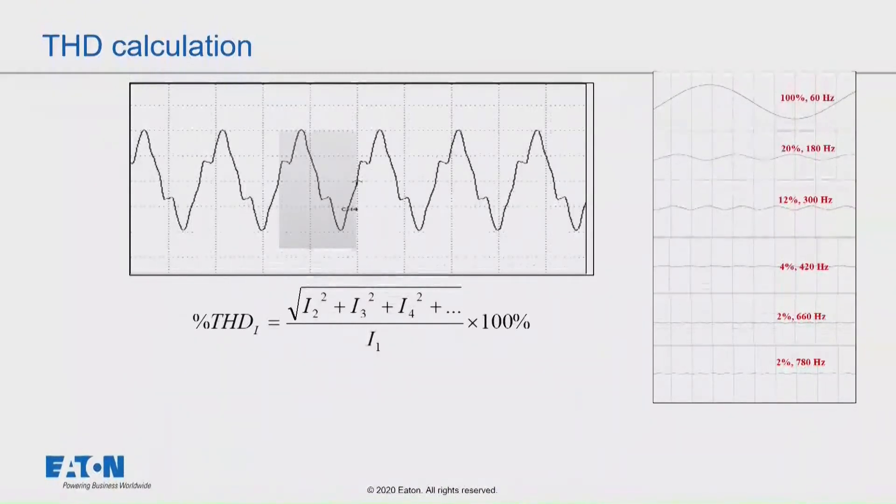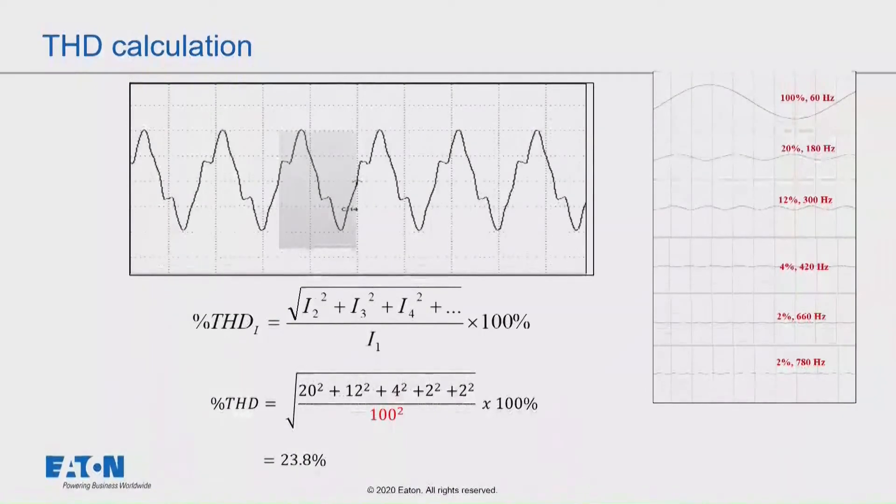So if I wanted to calculate total harmonic distortion, the way I would do that is I would put this equation together with all those harmonic orders. I would square all of the harmonics, the third, the fifth, the seventh, the eleventh, the thirteenth, and take the square root of that total and divide by the fundamental.